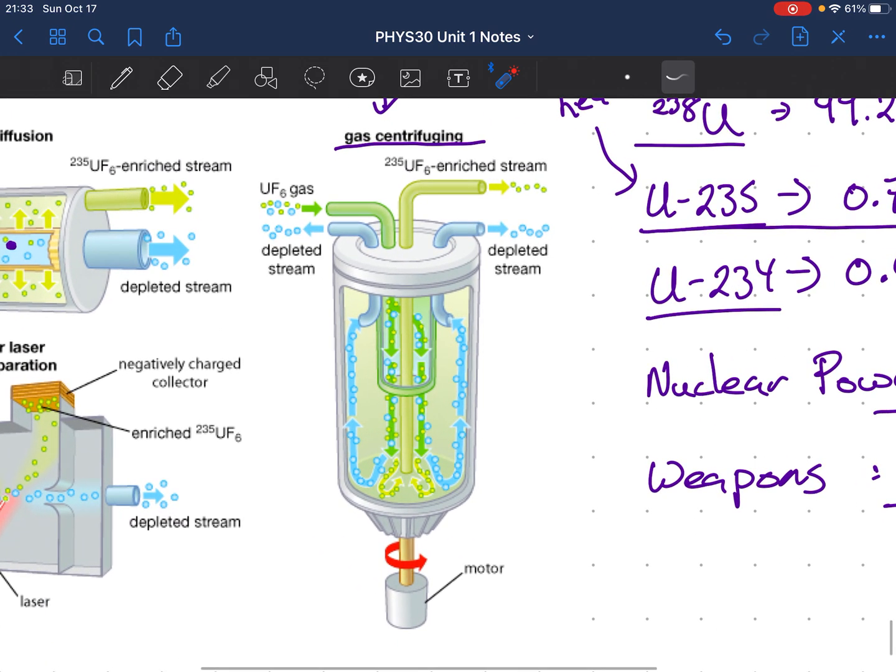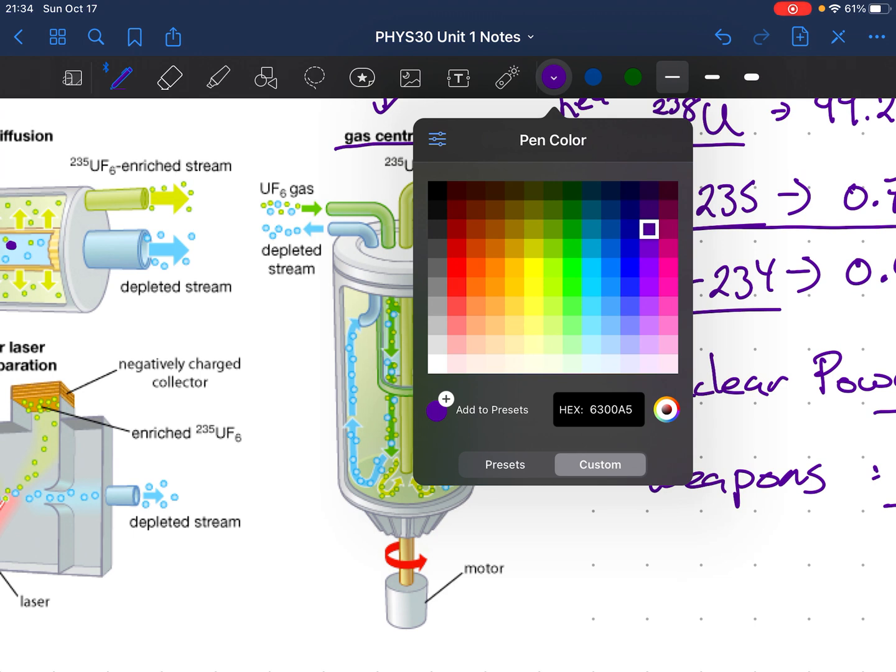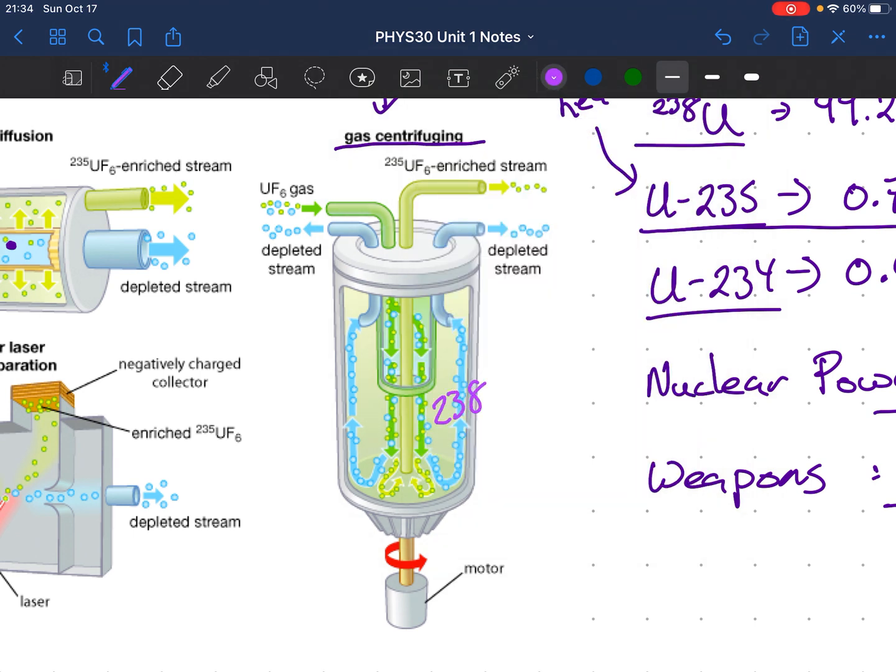All right, now, the centrifuge one is the one that is used the most. So what you get is you get a motor down here. This thing turns fast. It turns at like 20,000 RPM. It's really fast spinning. The heavier uranium-238 goes to the outside, while the lighter uranium-235 stays on the inside. Then the lighter uranium-235 gets sucked up here, and the heavier uranium-238 goes out here.